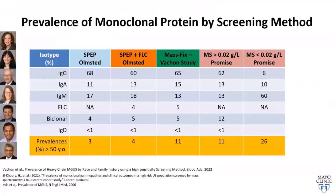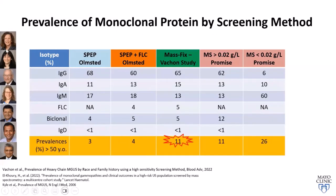Looking at prevalence of monoclonal protein by screening method in Olmstead County: serum protein electrophoresis found 3% prevalence; adding the sensitive free light chain assay raised it to 4%; and with Mass Fix in a familial cohort studied with Dr. Vachon, prevalence reached 11% — a substantial increase.